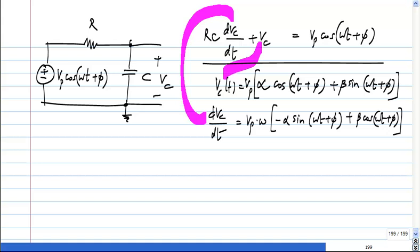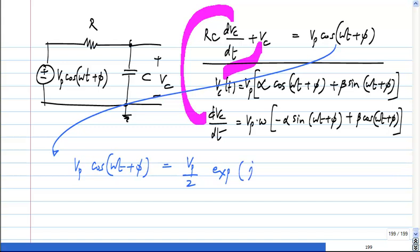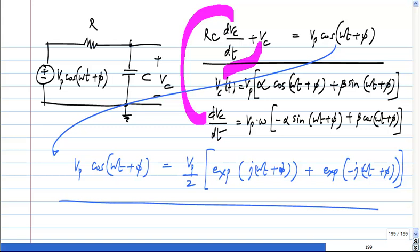So this is one way of doing it. Can you think of any other way, knowing what we know so far? Another thing you can do is: this Vp cos(ωt+φ) is (Vp/2)e^(j(ωt+φ)) + (Vp/2)e^(-j(ωt+φ)). The whole thing is multiplying this.